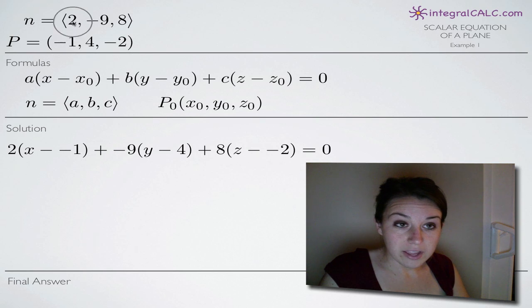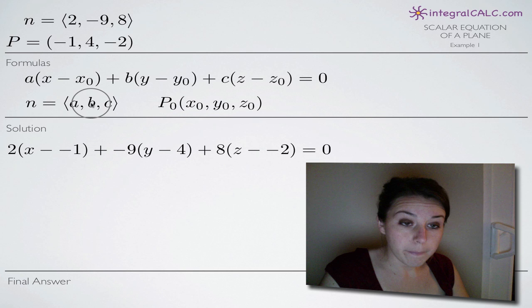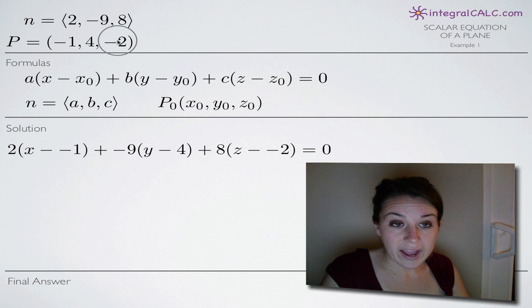Like I said, we're just going to plug in 2 for a, -9 for b, and 8 for c. And then we're going to plug in -1, 4, and -2 for x₀, y₀, and z₀.